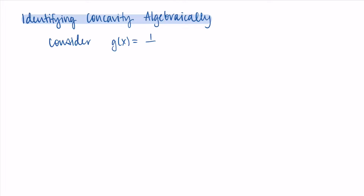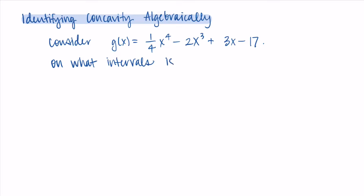Let's consider a function g equal to (1/4)x⁴ minus 2x³ plus 3x minus 17. We want to know on what intervals is g concave up and on what intervals is g concave down. Finding where a function is concave up and concave down is very similar to finding where a function is increasing and decreasing. The function is concave up when the second derivative is positive.